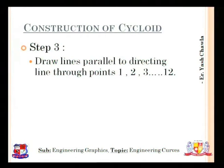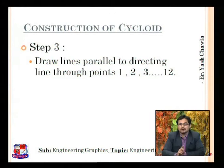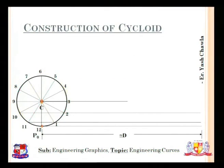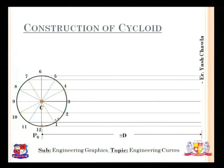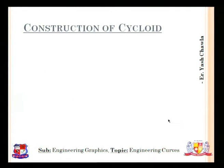Step 3: Draw lines parallel to the directing line from each division point — from points 1 through 12. There will be a total of 6 lines: one from 6, one from 7 and 5, one from 8 and 4, one from 9 and 3, one from 10 and 2, one from 11 and 1. Point 12 coincides with the existing directing line.